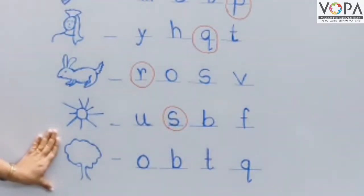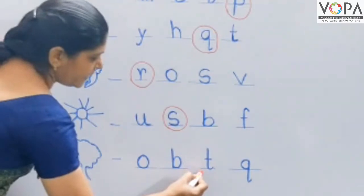The next picture is. What is this? This is a tree. T for tree. T-R-E-E, tree. The first letter of tree is T. So we circle round the letter T.